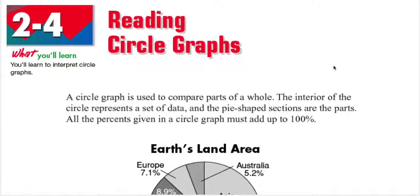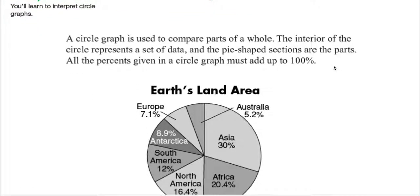A circle graph is used to compare parts of a whole — that's how we define circle graphs. Write this down in your notebook. Remember, a bar graph is used when you want to compare quantities or categories, a line graph is used when comparing changes over time, and a circle graph is used when you want to compare parts of a whole. That's the difference between those three graphs.